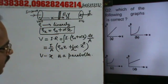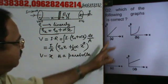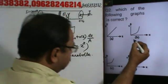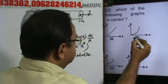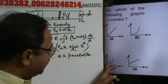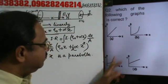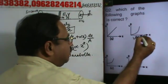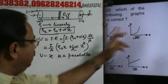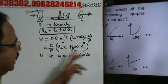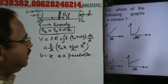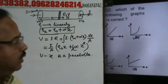The V–x curve is a parabola. Putting x = 0 gives V = 0, so the parabola passes through the origin. Therefore it is not option C (which does not pass through the origin). The correct option is B — it passes through the origin.